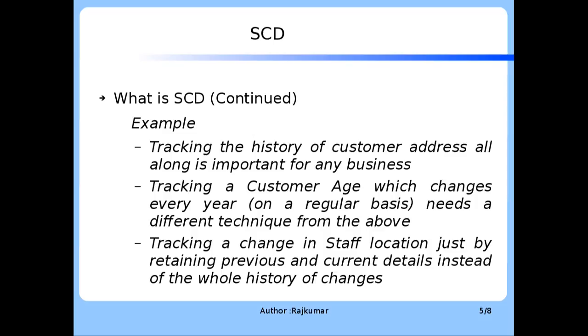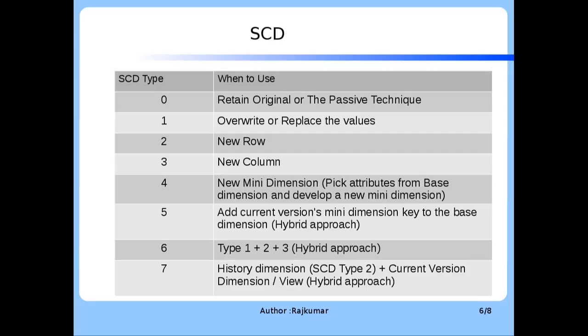For implementing these different tracking needs, we need separate and distinguished SCD techniques. The following are the different SCD types commonly practiced in the Data Warehouse domain. SCD Type 0 is about retaining the original value of a dimension attribute, sometimes called the passive technique. SCD Type 1 is about overwriting or replacing the values of a dimension attribute. Please grasp the concept of what is SCD and what are the different types practiced in the Data Warehouse world.